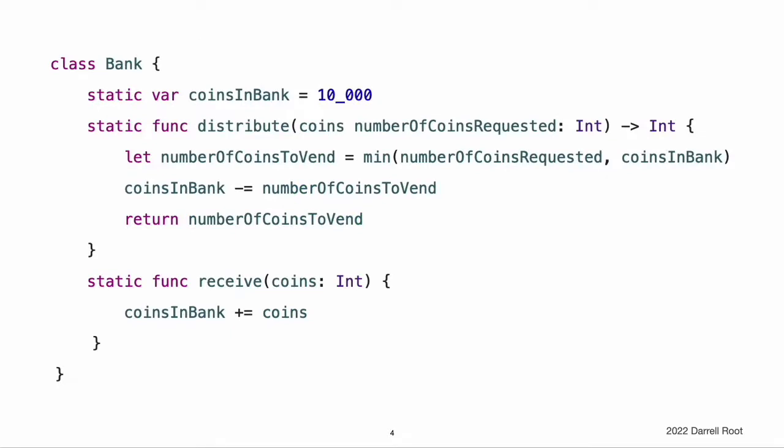Deinitializers in action. Here is an example of a deinitializer in action. This example defines two new types, Bank and Player, for a simple game. The Bank class manages a made-up currency which can never have more than 10,000 coins in circulation. There can only ever be one Bank in the game and so the Bank is implemented as a class with type properties and methods to store and manage its current state.